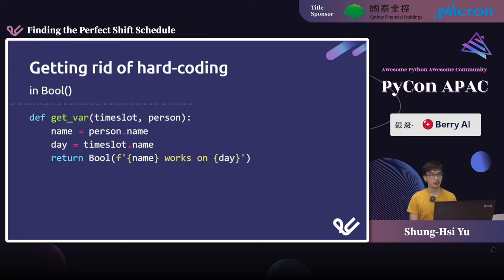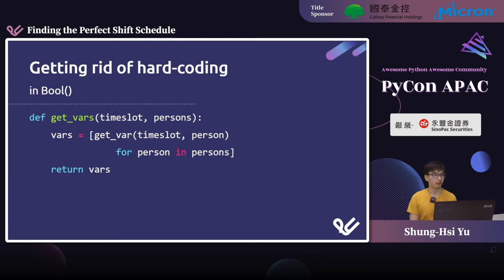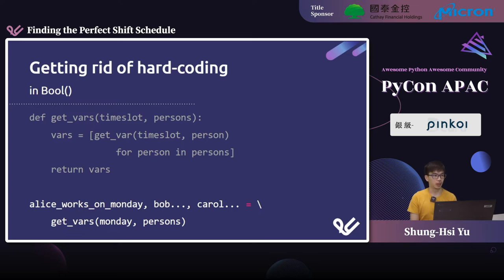To get started, let's create a function called getFar that takes a time slot and a person and returns the corresponding Boolean variable. We can also go one step further and create a getFars function that takes a list of persons and returns a list of Boolean variables. With that, we can call getFars to retrieve all Boolean variables associated with people working on Monday.